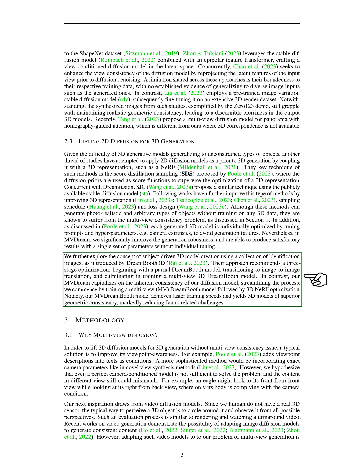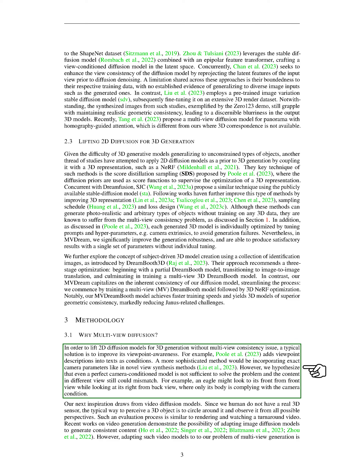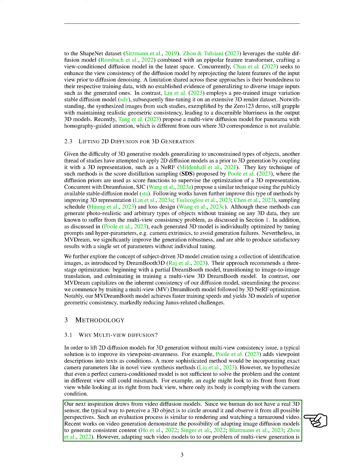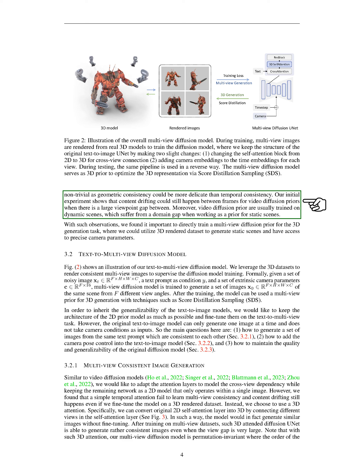To generate 3D objects without multi-view consistency issues, a common solution is to enhance viewpoint awareness. Some methods incorporate viewpoint descriptions into texts as conditions, while others include exact camera parameters. However, we believe that even a perfect camera-conditioned model may not fully solve the problem, as the content in different views could still mismatch. We draw inspiration from video diffusion models. Since humans typically perceive a 3D object by circling around it and observing it from all possible perspectives, this process is similar to rendering and watching a turnaround video.